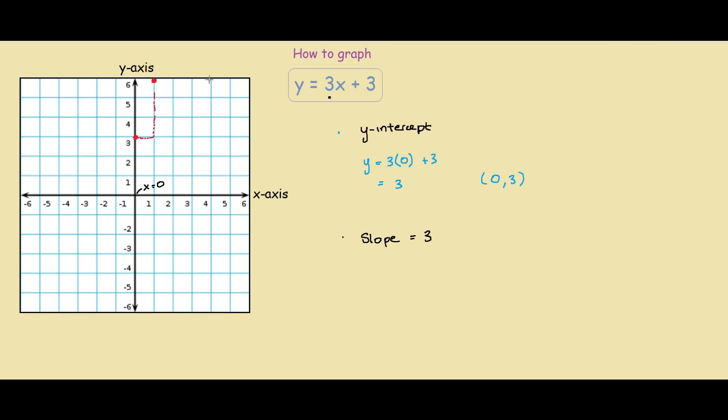So now we actually have everything we need to graph our line. If we connect these two points, we get this line over here. And the only thing to know is that this line actually extends further in both directions. And that's how you graph this line, y equals 3x plus 3.